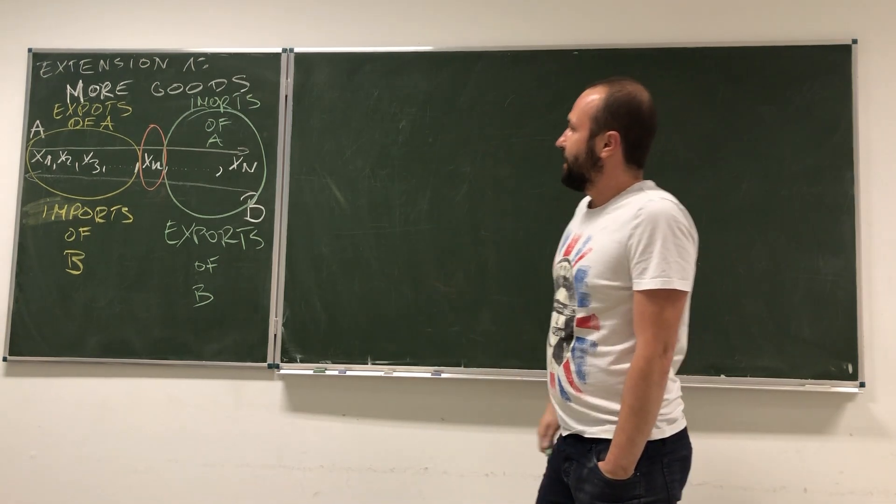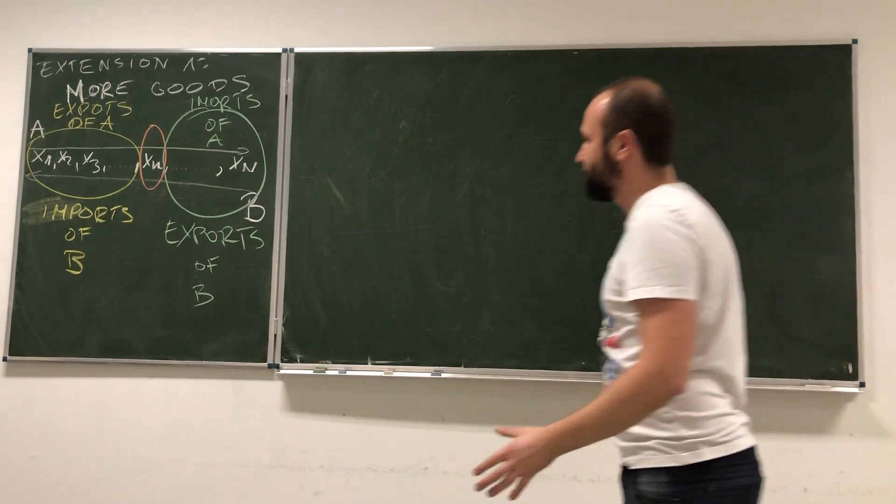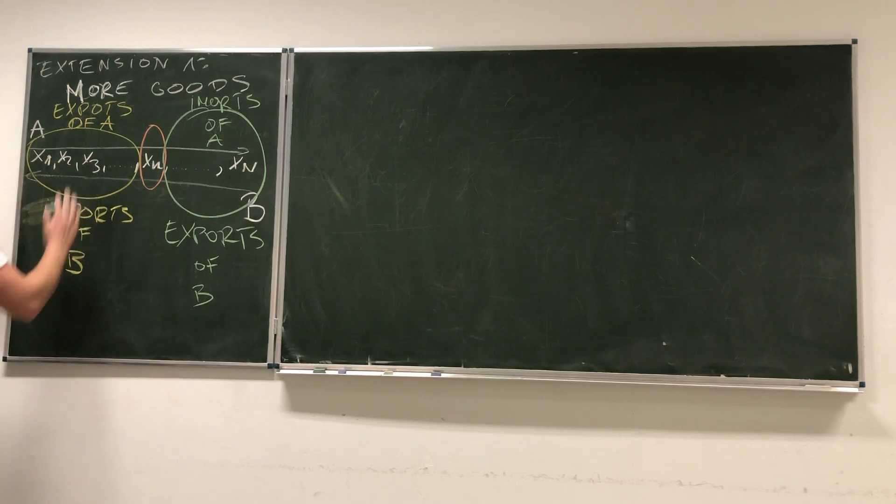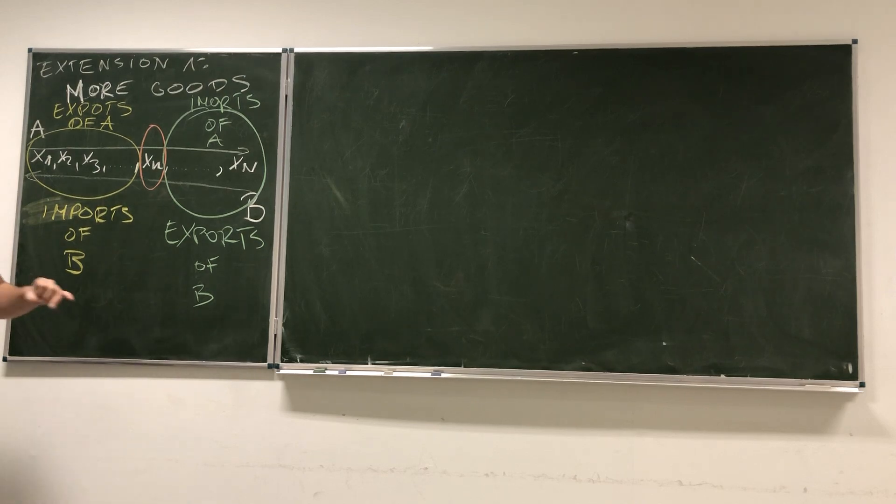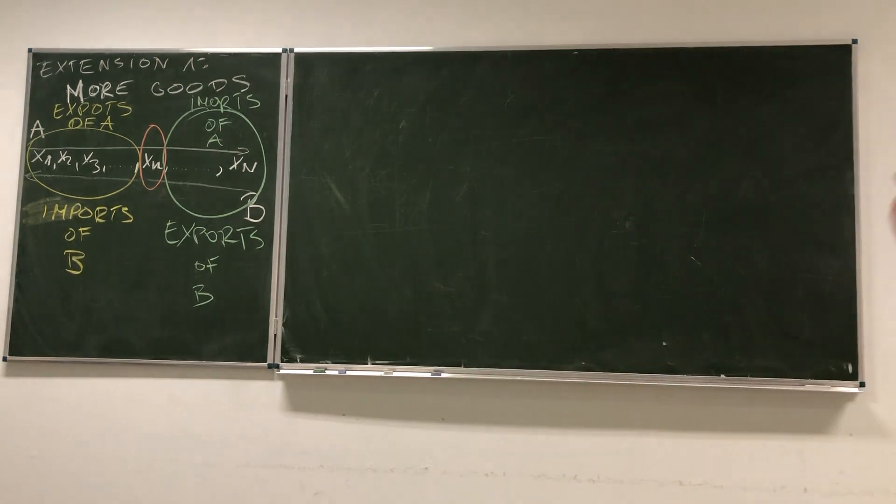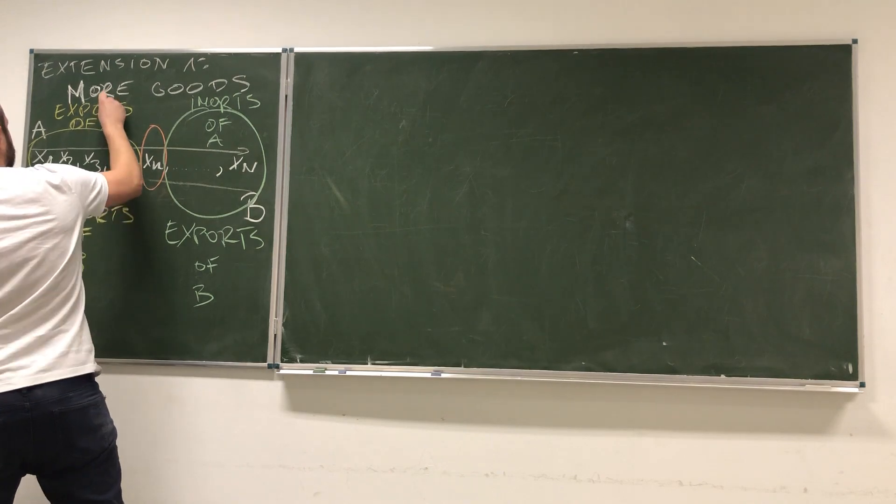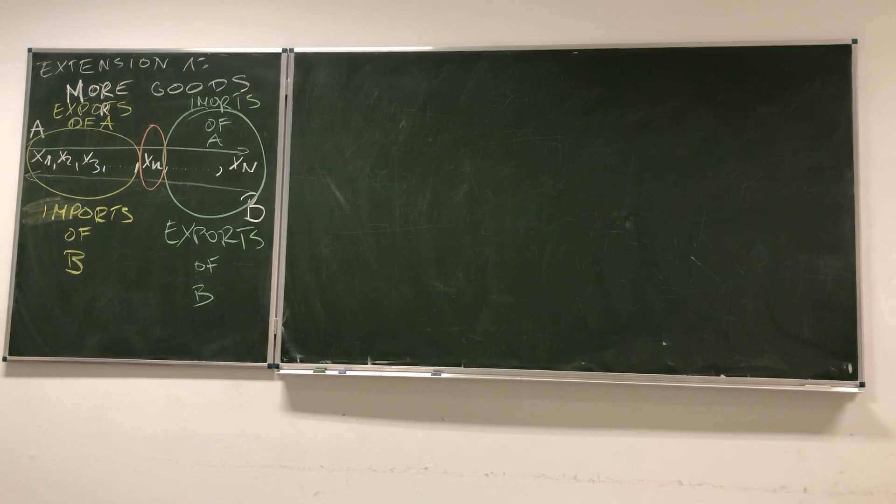Basically, there will be a group of goods that country A has comparative advantage in, which are exported by A, and goods exported to B. We've got this good in the middle that, depending on the specific circumstances, can be either traded or not traded. The extension of the model into a variety with more goods did not change that much. Simply, we see that there will be groups of goods for exports and goods for imports.